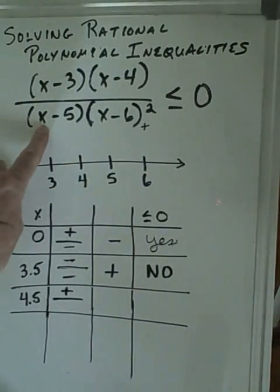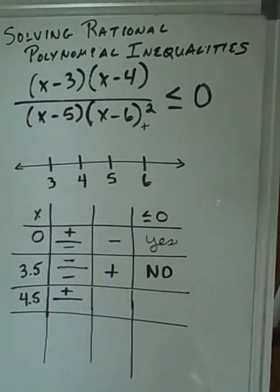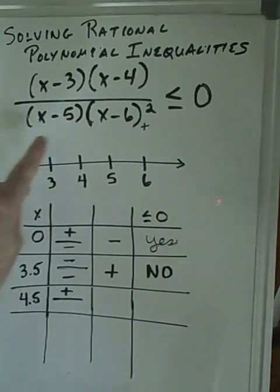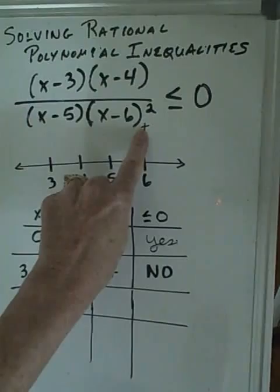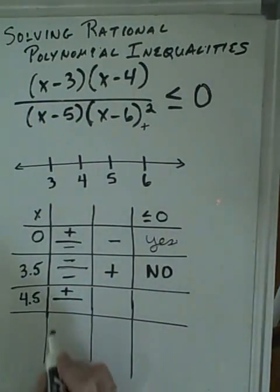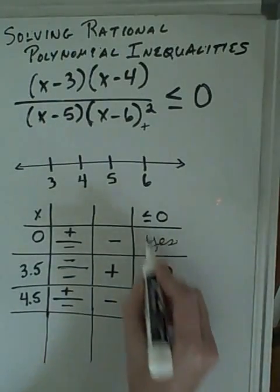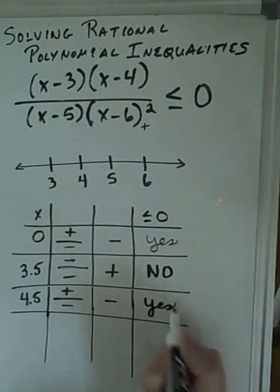We put 4.5 in here, this would be negative because 4.5 is less than 5, so that would be negative. And this is always positive, so a negative times a positive is a negative. So our total value would be a negative. And is a negative less than zero? Yes.